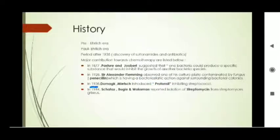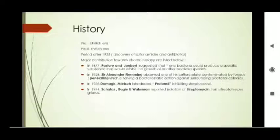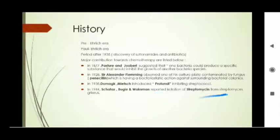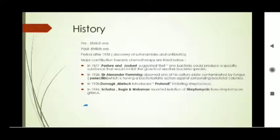Then, in 1938, Domagk introduced Prontosil, and Prontosil was found to inhibit Streptococcus. Then, in 1944, Schatz, Bugie, and Waksman reported the isolation of Streptomycin, identifying it from a species of Streptomyces.